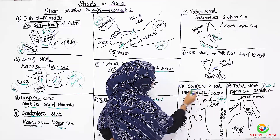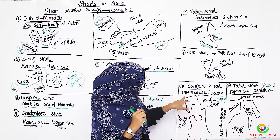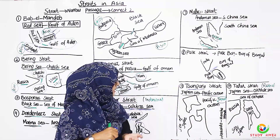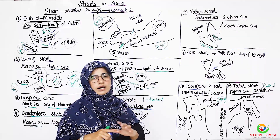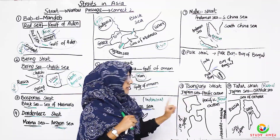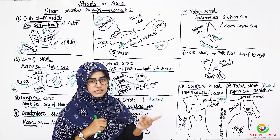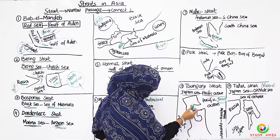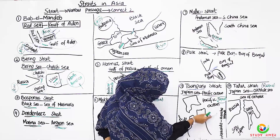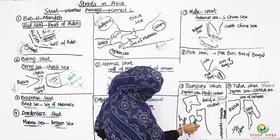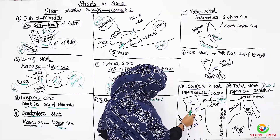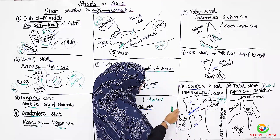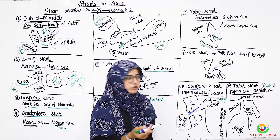Then there is the Tsugaru Strait, which is in Japan. The two water bodies it connects are the Sea of Japan on one side and the Pacific Ocean on the other — the world's largest ocean. The two islands of Japan on either side are Hokkaido and Honshu. If asked which land masses, you say Honshu and Hokkaido Island.